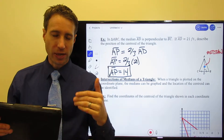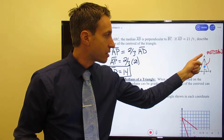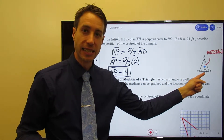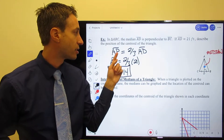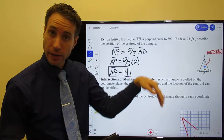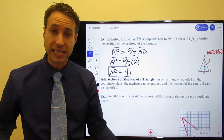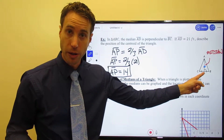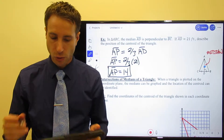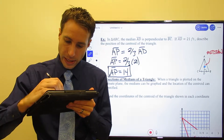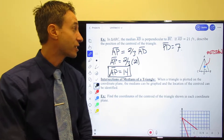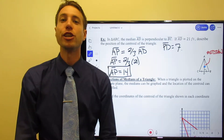Now the distance from the centroid to D — I didn't ask for it, but let's do it anyway as a good exercise. You could either set up that PD is one-third the entire distance, or use the segment addition postulate: the entire thing is 21, AP is 14, so 21 minus 14 gives you PD equals 7.